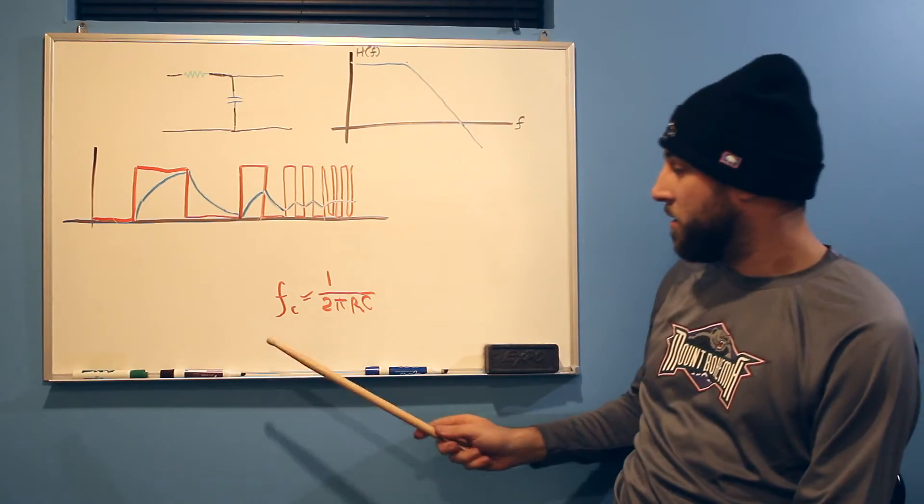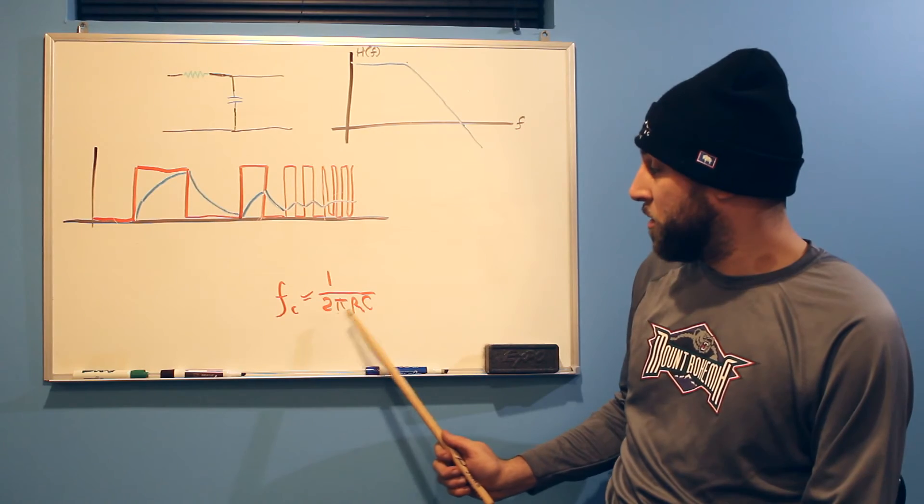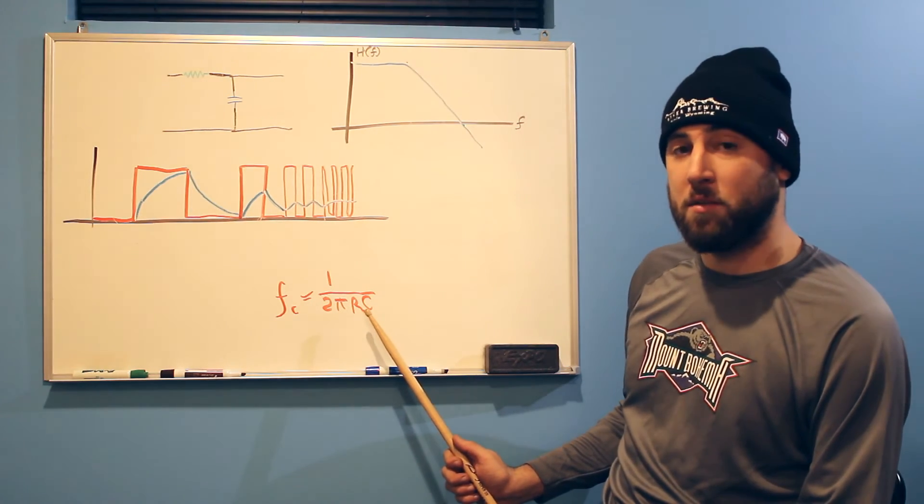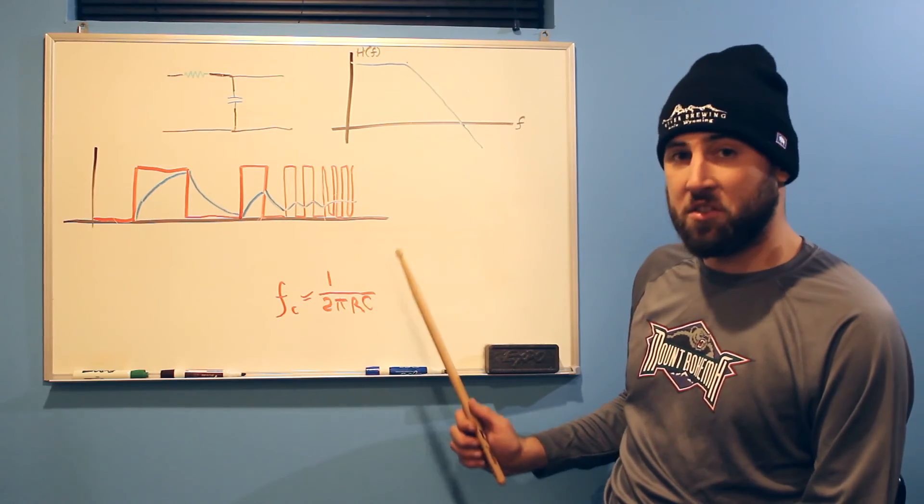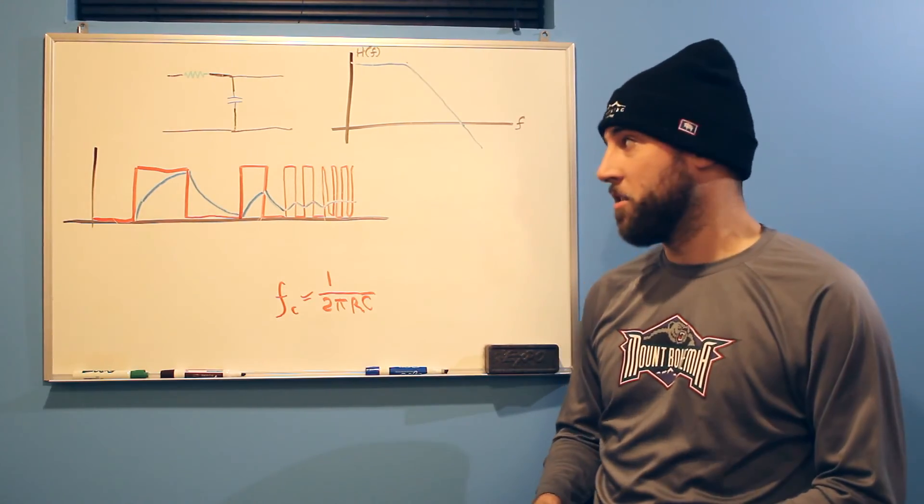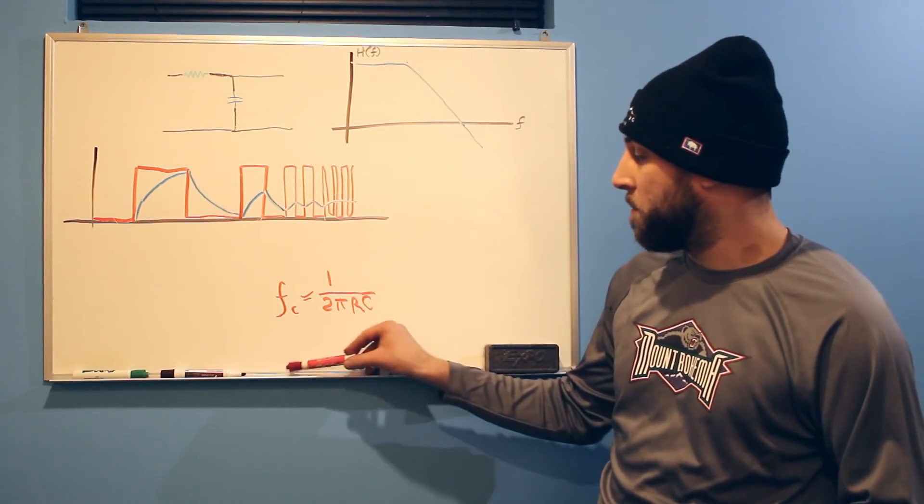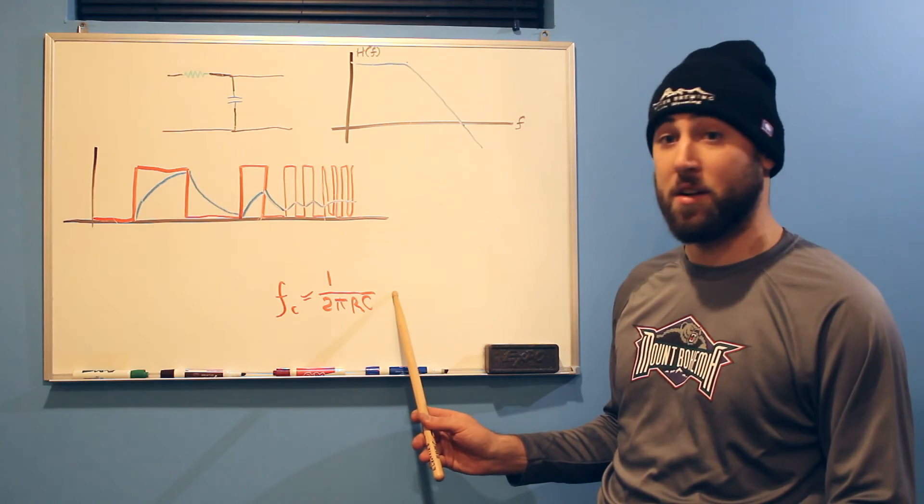So in this case, Fc is our cutoff frequency. 1 over 2 pi, R is our resistance and C is our capacitance. And resistance is just in ohms and capacitance is in farads just like you'd be used to. So our cutoff frequency for this configuration is in Hertz.